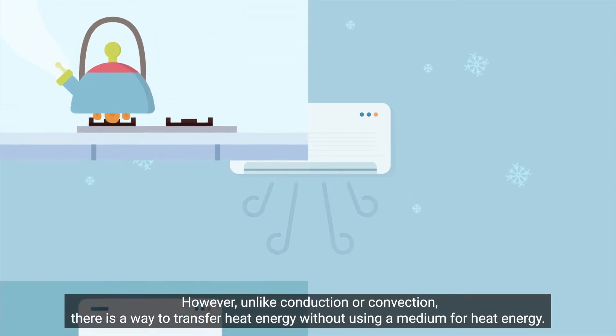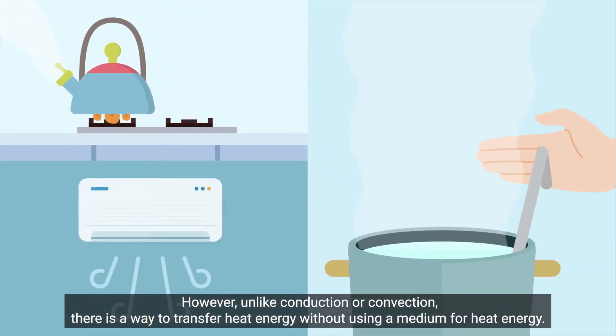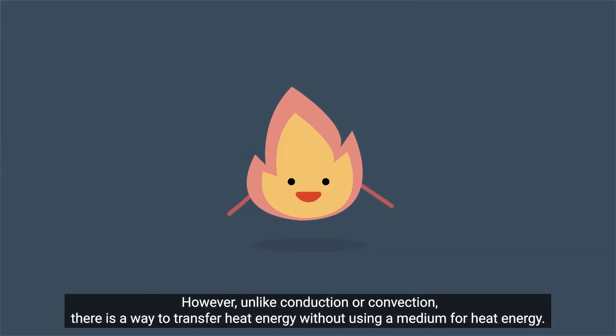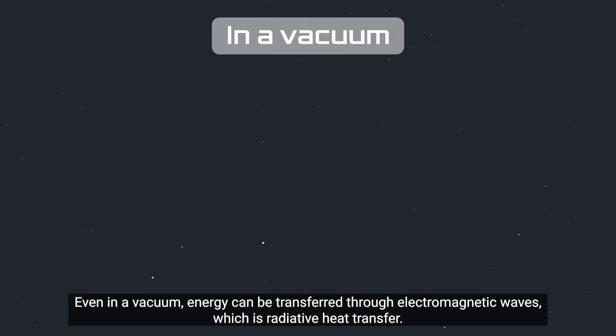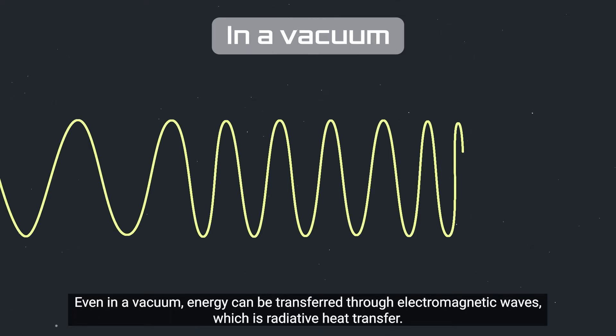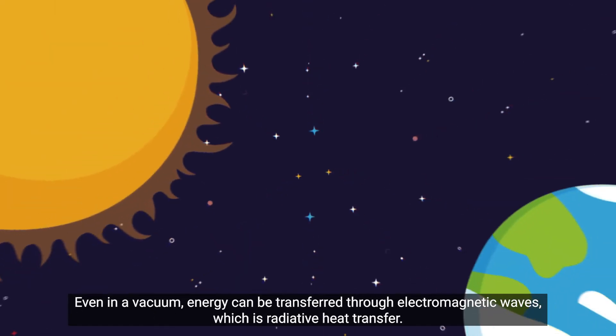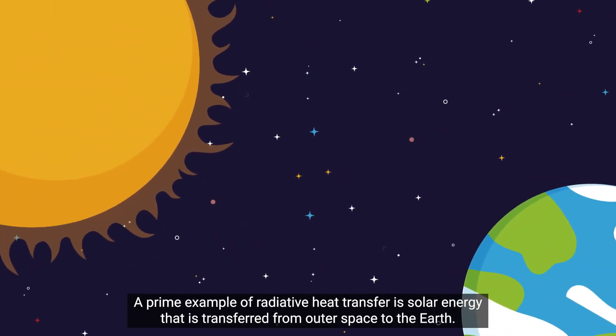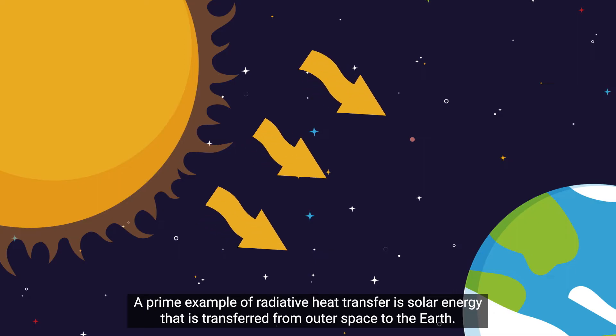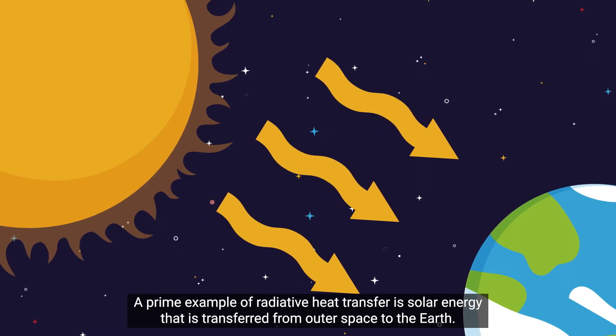However, unlike conduction or convection, there is a way to transfer heat energy without using a medium for heat energy. Even in a vacuum, energy can be transferred through electromagnetic waves, which is radiative heat transfer. A prime example of radiative heat energy is solar energy that is transferred from outer space to the Earth.